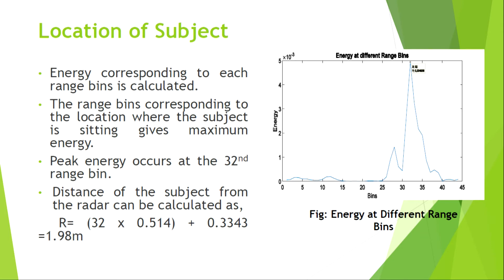We can find the location of the subject using the predefined radar range bin, which is 0.0514 meters, and an offset of 0.3543 meters representing the radar's error. When we get a signal energy peak at bin 32, the range is calculated as 32 multiplied by the range bin plus the offset, giving a location of approximately 1.98 meters — which is almost correct.